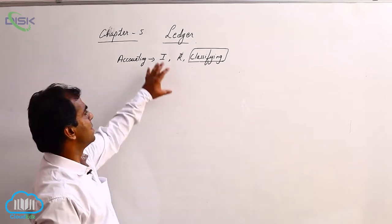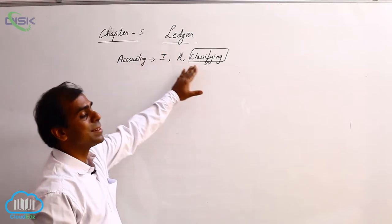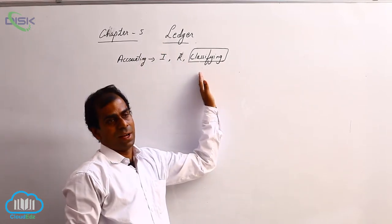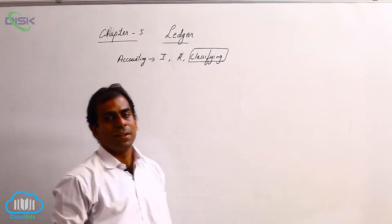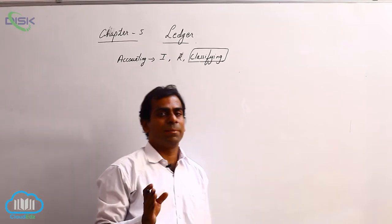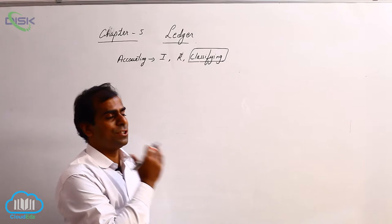Now in this chapter or what we say preparation of ledgers, we classify the accounts after recording. Now in recording we have seen that you have applied the rule of debit and credit and you have written the journal entries.